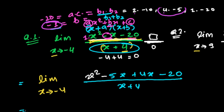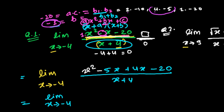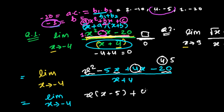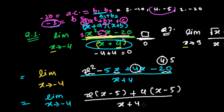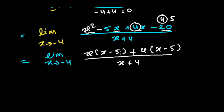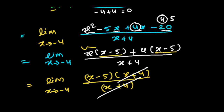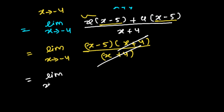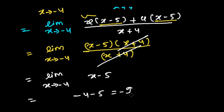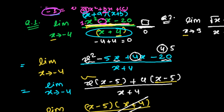Now grouping: x(x - 5) + 4(x - 5), which factors as (x - 5)(x + 4), all divided by (x + 4). We cancel (x + 4) from numerator and denominator. The expression becomes: limit as x tends to -4 of (x - 5). Substituting x = -4 gives -4 - 5 = -9. That is our answer for the first question.